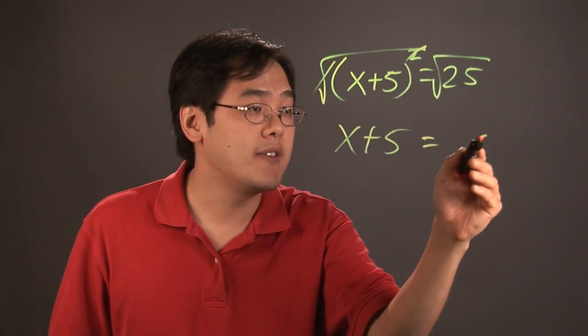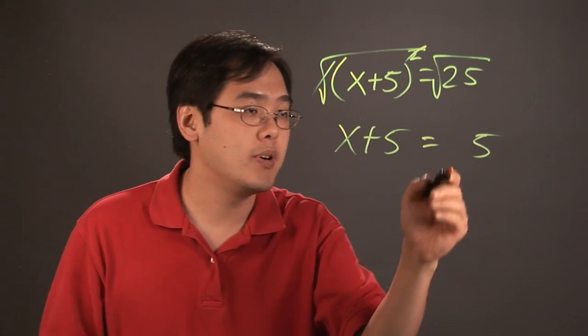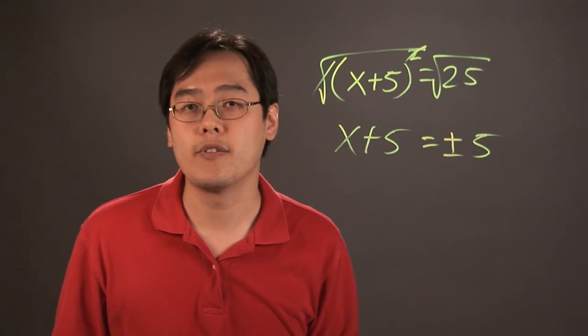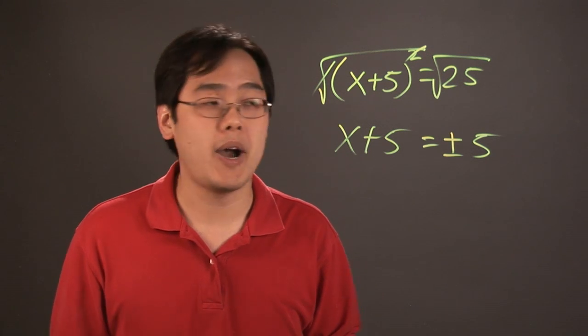Now, the square root of 25 is indeed 5, but what folks often forget is, with the square root property, you have to put the plus or minus symbol in front, simply because more than one answer might be possible.